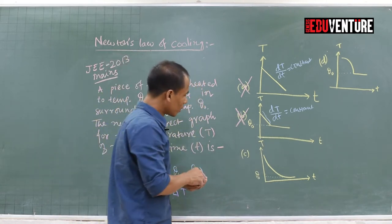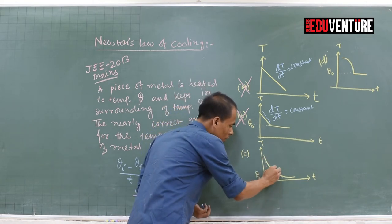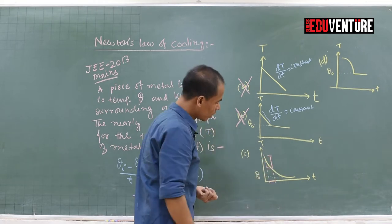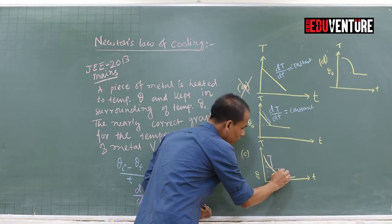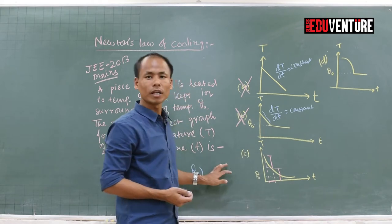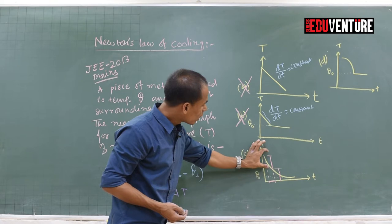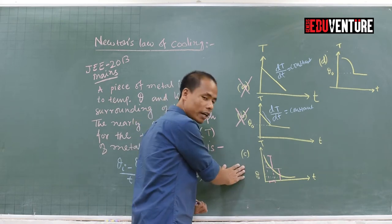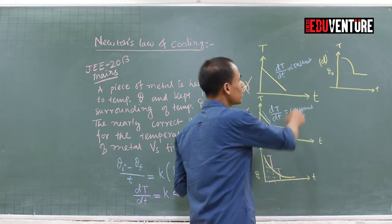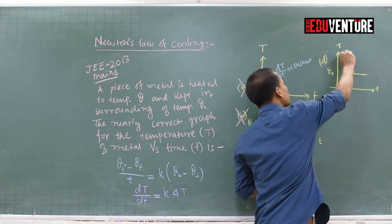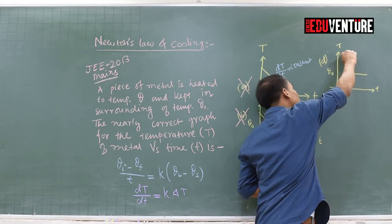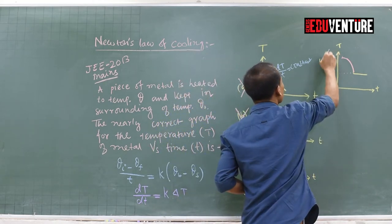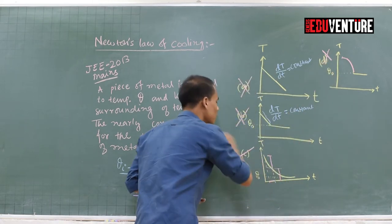For option C, during a small initial duration the rate of cooling is high, and after some time the rate of cooling is much smaller — this matches Newton's Law. The curve is steep initially and flattens over time. For option D, the rate of cooling is initially very low and then increases, which is opposite to Newton's Law. So option C is the correct answer.